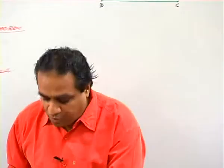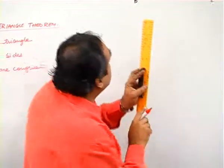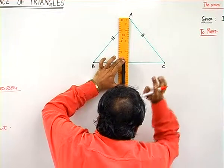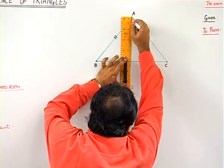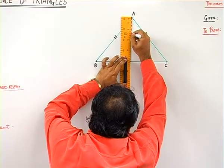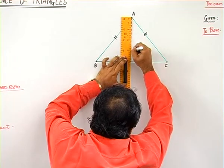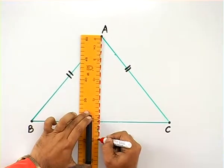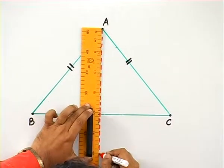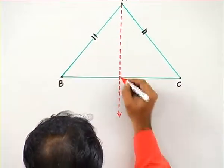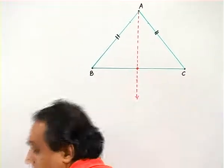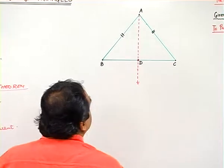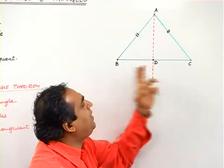Now for this particular proof, we shall do construction. Now what is the construction that we are going to do? We shall construct or draw the angle bisector of this angle BAC, intersecting BC at this point, and we call this point as point D, such that D lies between B and C.